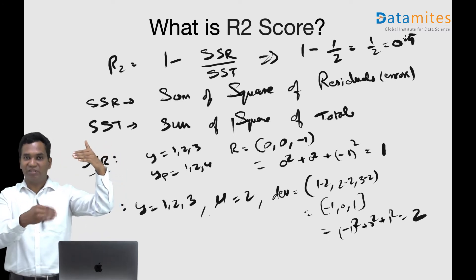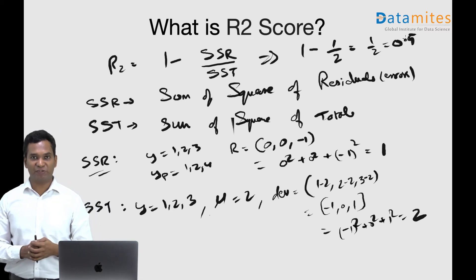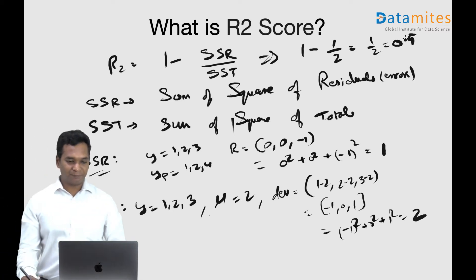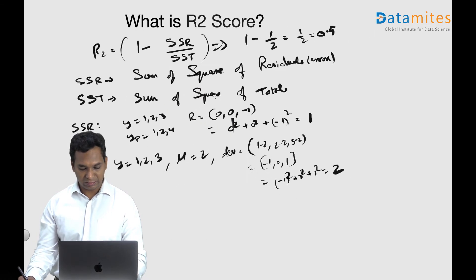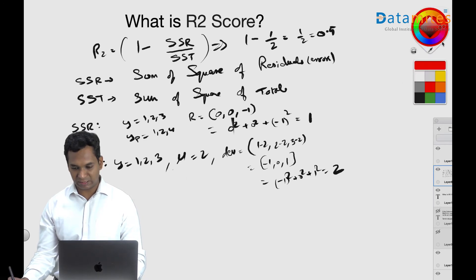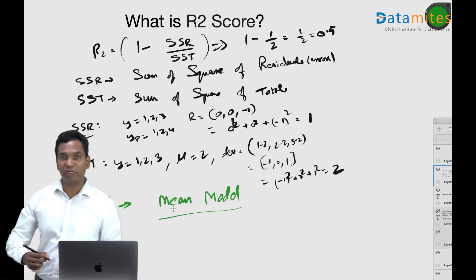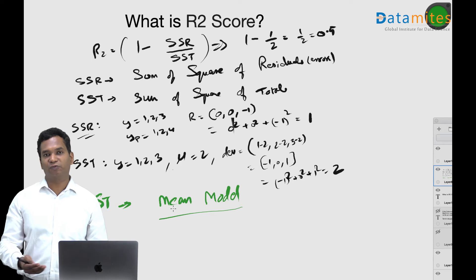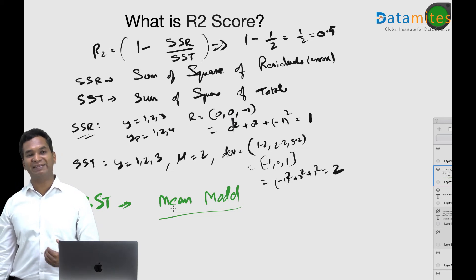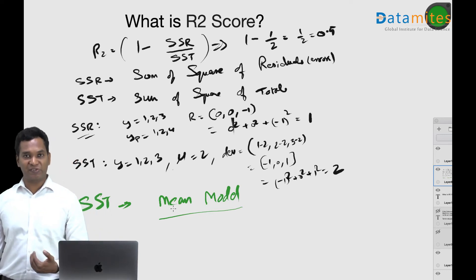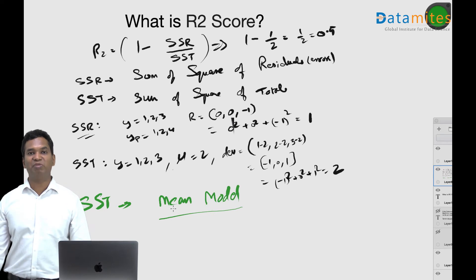SSR is the sum of squares of residuals — errors between the actual data and the predicted data from your model. SSD is the actual data's deviation from its own center, squared and summed. SSD is also called the mean model. The mean model is a model that always predicts the mean. For example, if a student scored 80% and 90% in two semesters, a typical prediction for the third semester would be the mean, around 85%.